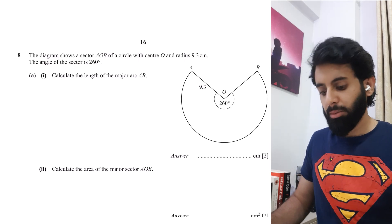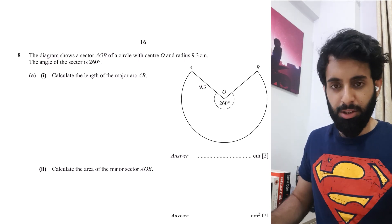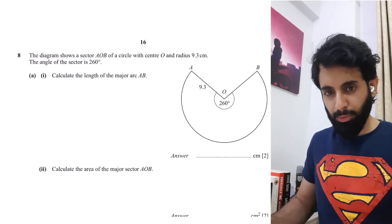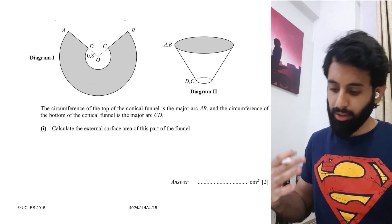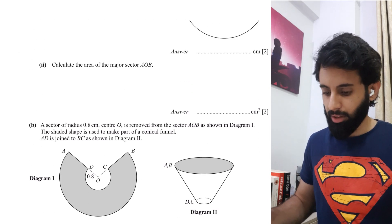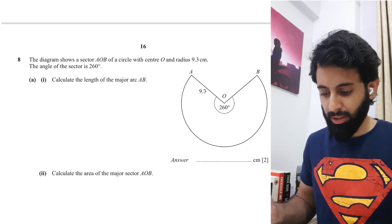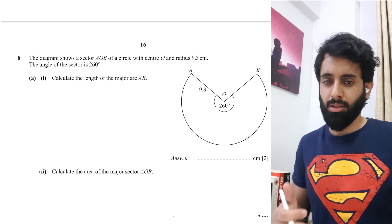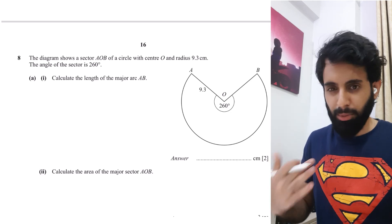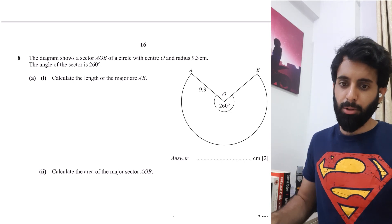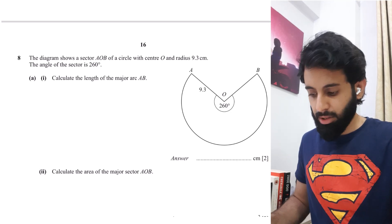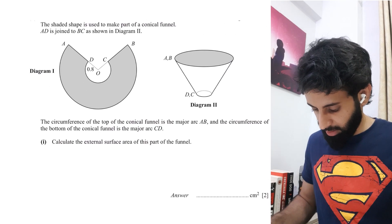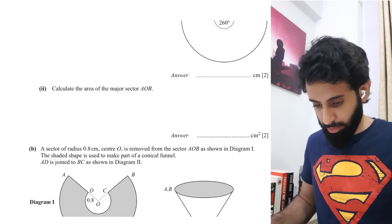In this video I'm going to be solving another question on mensuration. This involves a bit of 2D mensuration that later turns into 3D mensuration — you can expect that from mensuration questions. It can be mensuration followed by trigonometry, or 2D mensuration followed by 3D mensuration. This was requested by one of my students, so let's get started. This is from May/June 2015 Paper 2 Variant 1.